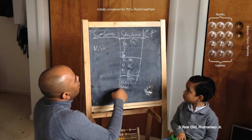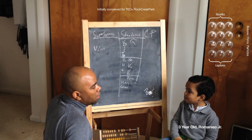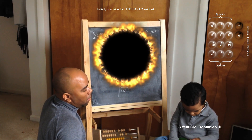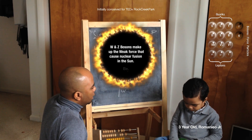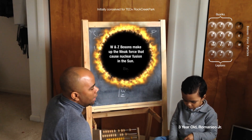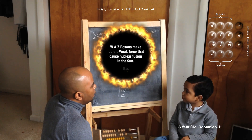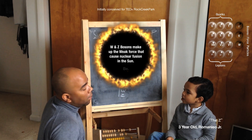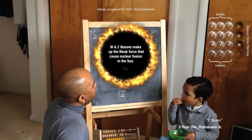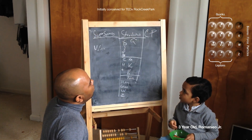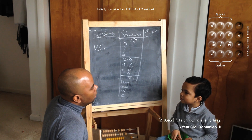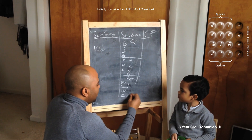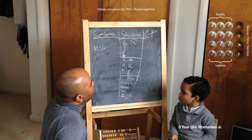Now we're getting to the aspect of supersymmetry. We have what's responsible for the weak forces: the W boson, and the Z boson. The Z boson has no antiparticle.